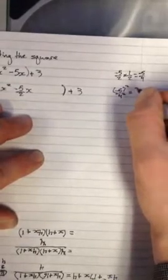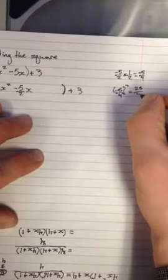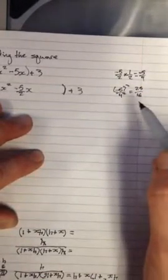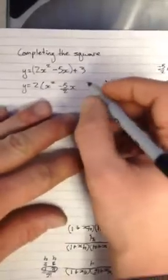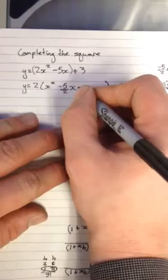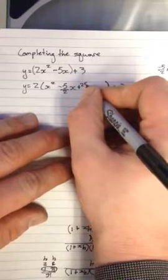I'll leave it as a fraction. Now this is the part that I'm going to add and subtract inside my bracket. So I've left enough room for plus 25 over 16 minus 25 over 16.